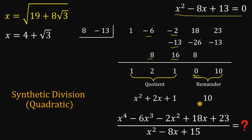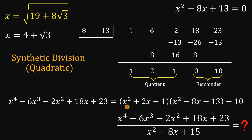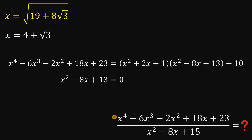In short, dividing x to the fourth power minus 6x cubed minus 2x squared plus 18x plus 23 by x squared minus 8x plus 13 gives a quotient of x squared plus 2x plus 1 and a remainder of 10. We can rewrite the numerator as (x squared plus 2x plus 1) times (x squared minus 8x plus 13) plus 10. Since x squared minus 8x plus 13 equals 0, the product term is 0, so the numerator equals 10.